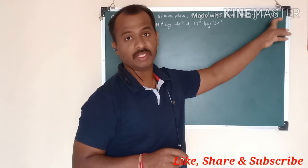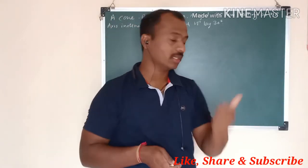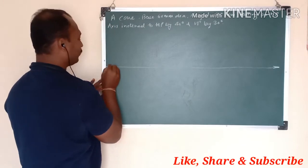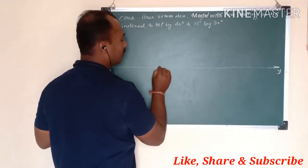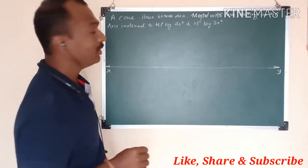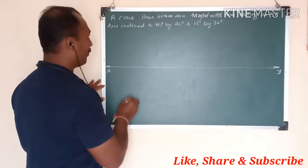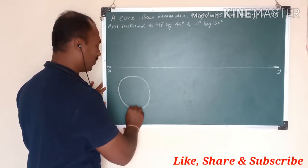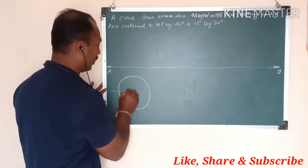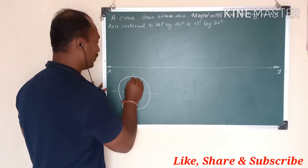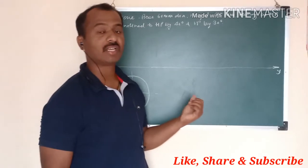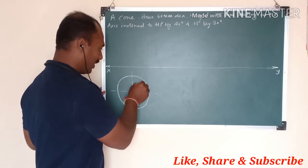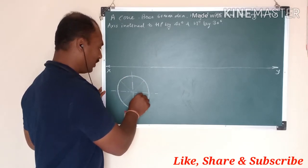It is resting on HP, so we consider it standing on HP — its top view will be a circle and front view will be a triangle. Draw XY axis first. In the top view it appears as a circle with diameter 60mm. In the first step we assume it is resting on HP, so the top view appears as a circle. Now divide this circle into 8 equal parts.